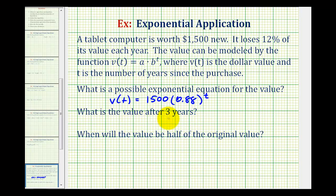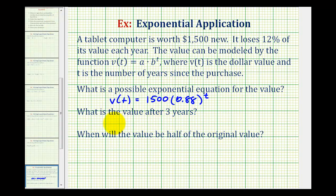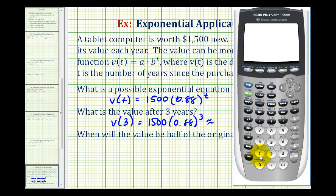So to find the value after three years, we need to determine v(3). So we'll substitute 3 for t and evaluate this on the calculator. So we'll have 1,500 times 0.88 raised to the power of 3. So the value of the computer is approximately $1,022.21 after three years.